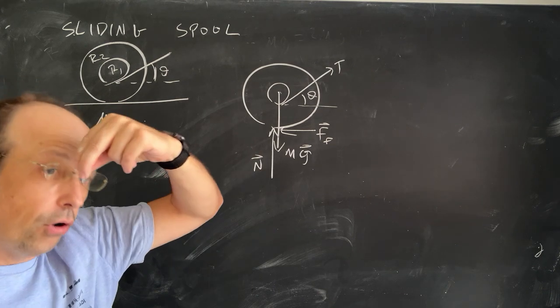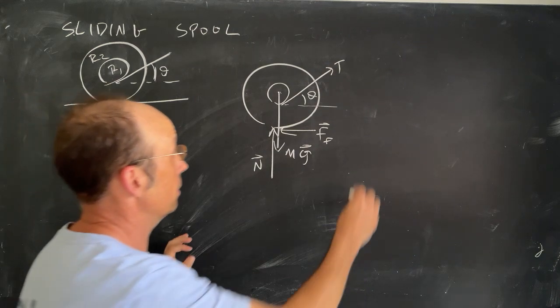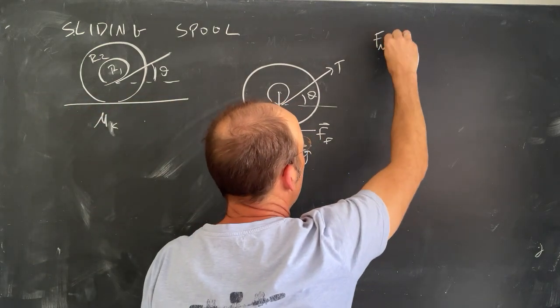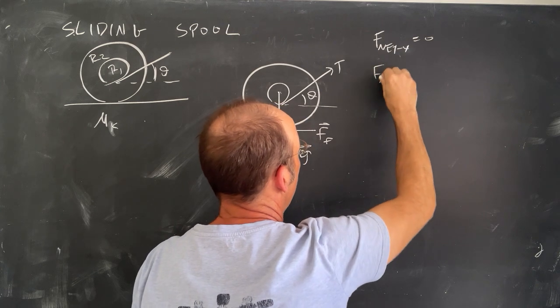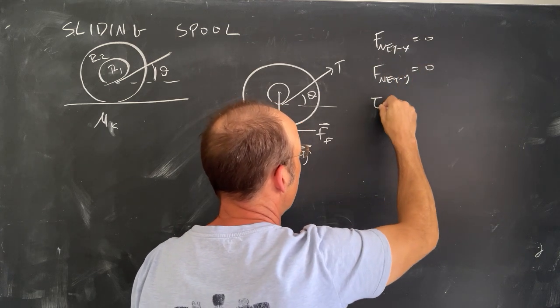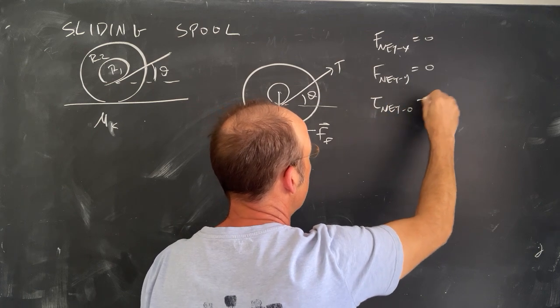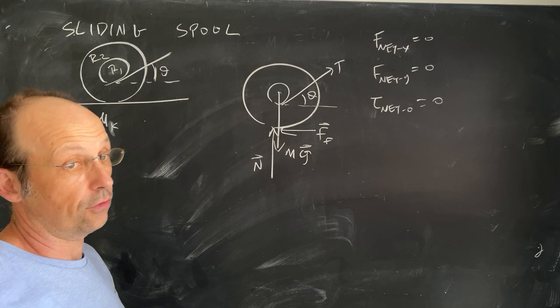If I'm pulling in at sliding and moving at a constant speed, then I can write the following three equations. F net in the x direction is 0. F net in the y direction is 0. And torque net about some point O is equal to 0. Let's go ahead and write down these equations.